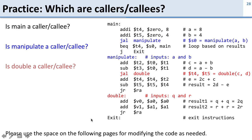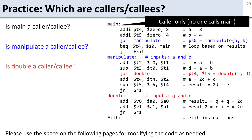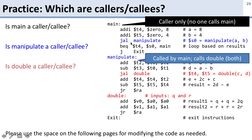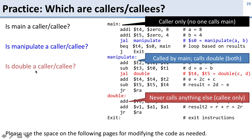Which of these are callers and callees? Main is a caller only — it's the first function in a program so nobody calls it; it just calls things. Manipulate is called by main, making it a callee, and it calls double, making it a caller — so it's both. Double never calls anything else, so it can't be a caller, but it is called by other things, so it's just a callee. You need to know whether something is a caller or callee to know what you need to save.